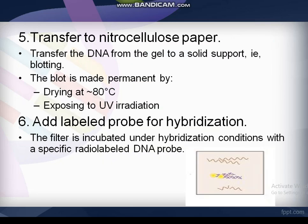The next step is transfer to nitrocellulose paper. The DNA is transferred from the gel to a solid support — that is, blotting. The blot is made permanent by drying it at 80 degrees Celsius, then exposed to UV irradiation.